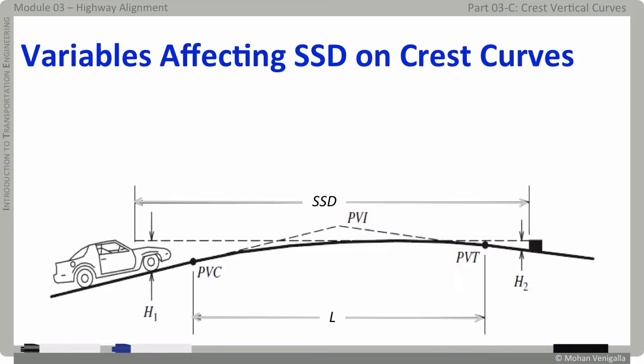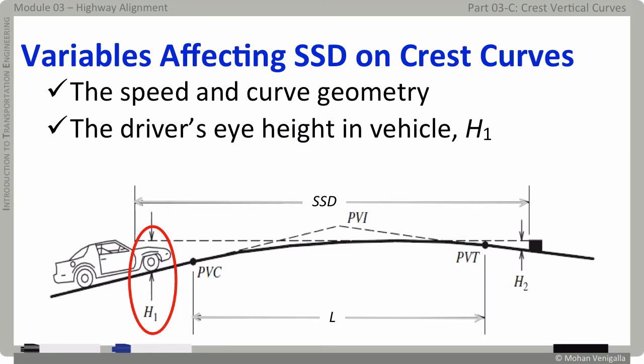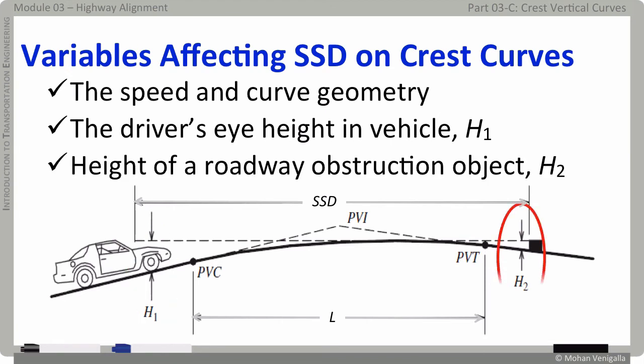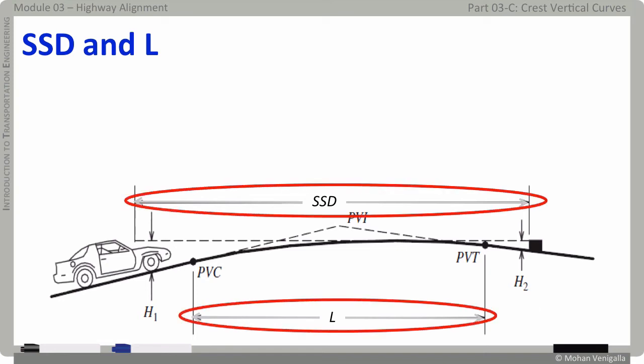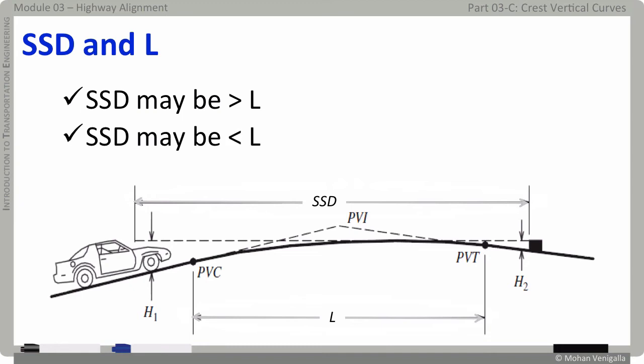If I ask you what are the variables that affect stopping sight distance on a crest curve, you would immediately say, of course, the speed and curve geometry, and you would be correct. In addition to those two variables, the driver's eye height in the vehicle and the height of the object the driver needs to see before stopping also determines stopping sight distance. Take a look at relative values of SSD and L. In this example, we see SSD is greater than L, but it won't always be the case. Depending on the speed and grades G1 and G2, stopping distance can either be greater than the length of the curve L like in this case, or it can be less than L. Either way, the minimum length of the curve is dictated by how far the driver can see on the other side of the crest. So, in addition to SSD, other variables in consideration to determine minimum length of the crest curve are G1 and G2 and H1 and H2.